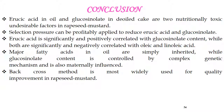Concluding the Brassica section: erucic acid in oil and glucosinolate in deoiled cake are two nutritionally toxic, undesirable factors in rapeseed and mustard. Reducing them is a major challenge in all cultivated varieties. Selection pressure can be profitably applied to reduce these two compounds. Erucic acid is significantly and positively correlated with glucosinolate content, while both are significantly and negatively correlated with oleic and linoleic acid. Major fatty acids in oil are simply inherited, while glucosinolate content is controlled by complex genetic mechanisms and is also maternally influenced. The backcross method is most widely used for quality improvement in rapeseed and mustard.